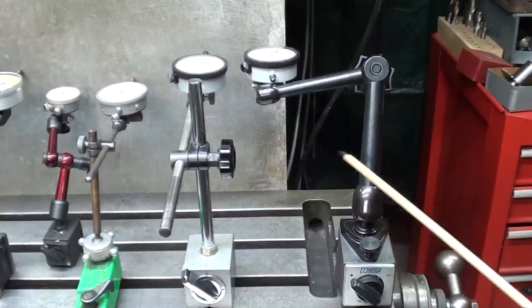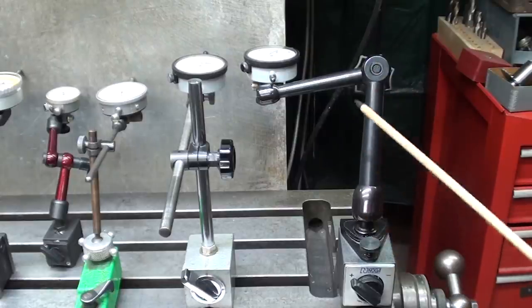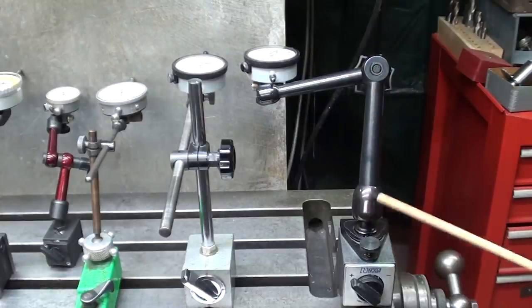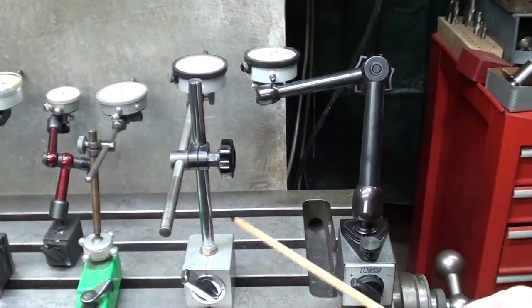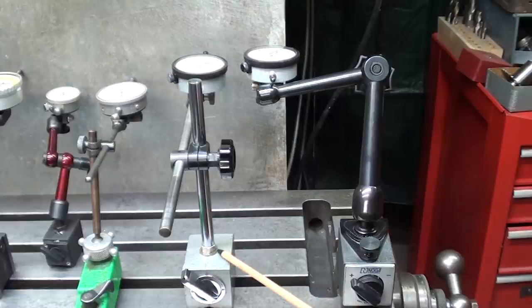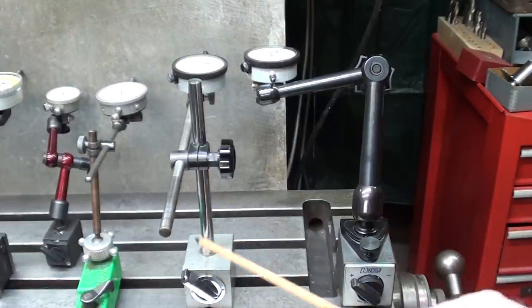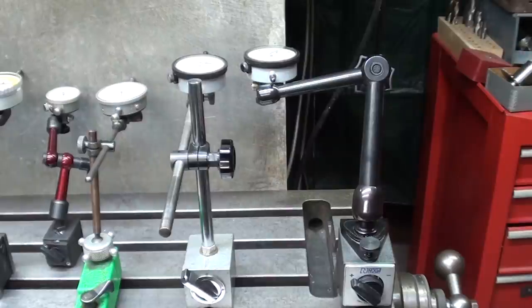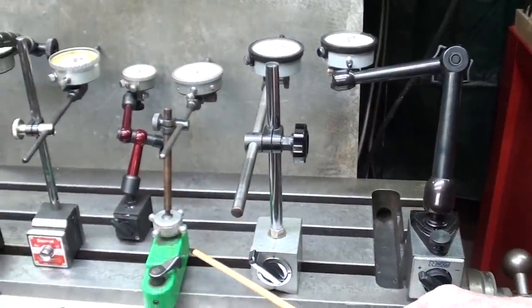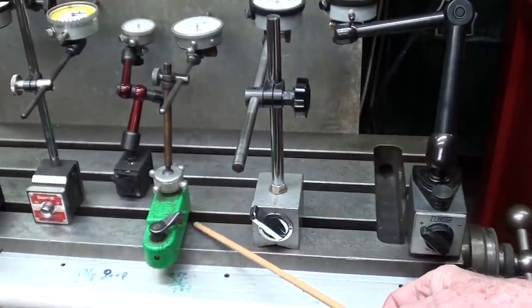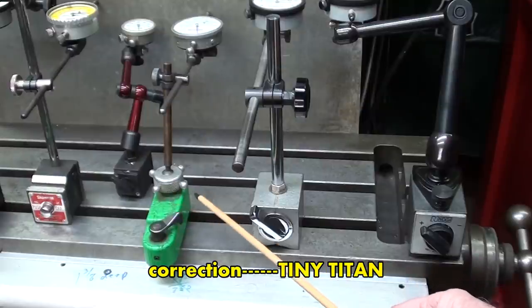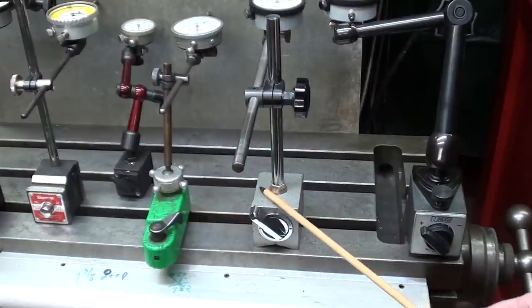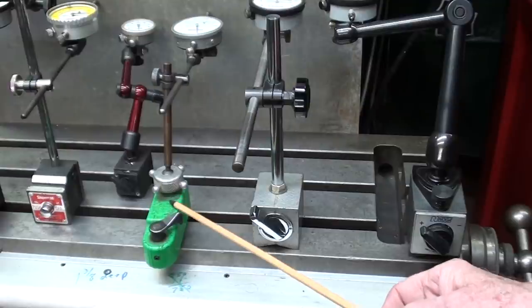Let me introduce them. This is a Noga articulated type, their middle size one with the adjustment down here, everyone's favorite. This one is a Central instrument, it's rather nice, and I do very much like this vertical post type. I consider them to be rigid, but we'll see. This little beauty here is really an old one, it's an Enco Mighty Might I think they call it, and the magnet on it is not all that good compared to more modern magnets. This is probably 50 or 60 years old.